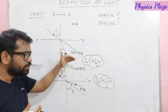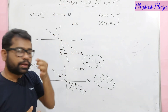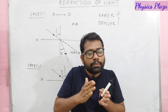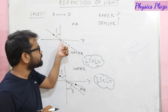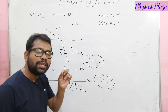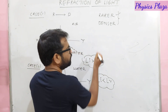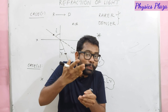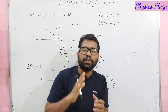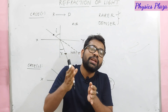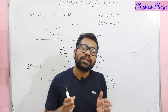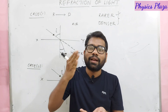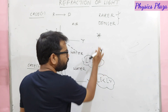This phenomenon — where light bends at the interface between two mediums when moving from rarer to denser or denser to rarer — is called refraction of light. When light travels from one transparent medium to another transparent medium, it bends at the interface. The cause of refraction is the change in speed of light. Change in speed of light is what causes refraction.